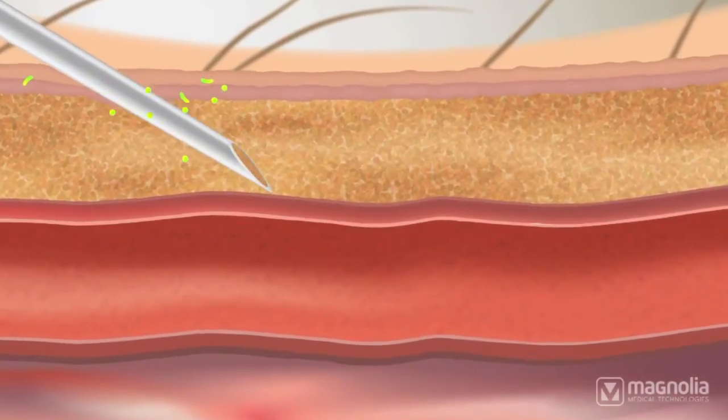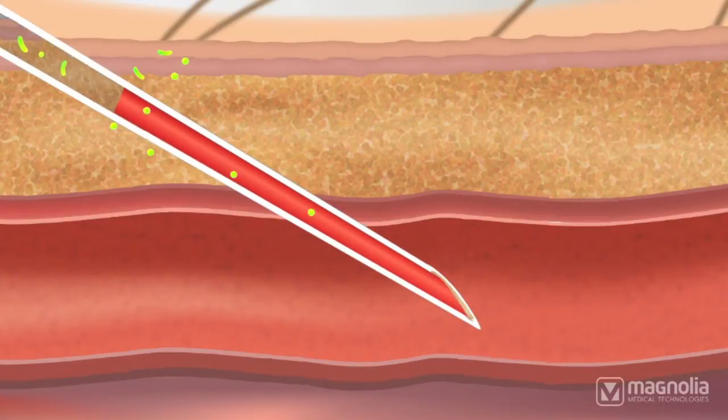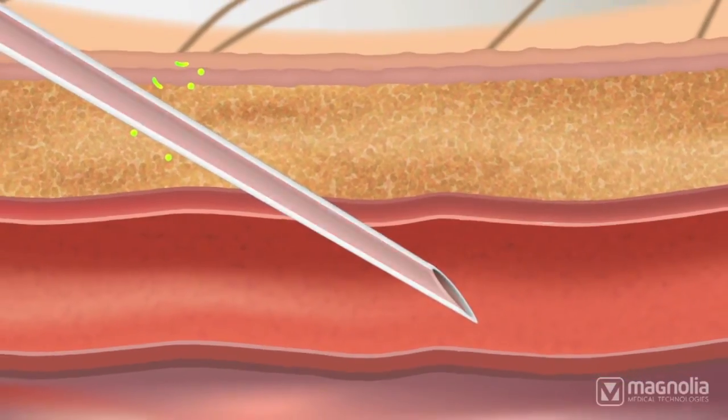When the venipuncture is performed to gain venous access, these contaminants can enter the needle lumen and are then included in the inoculation sample.